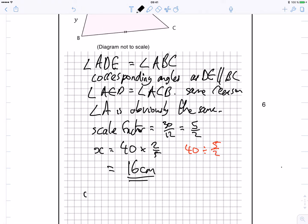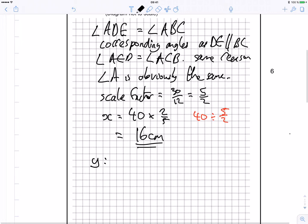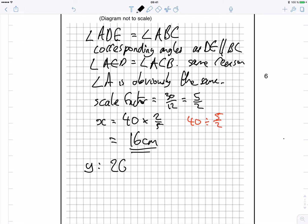Now Y is a bit trickier. We need to know what AD is. Now AD is 26. So we do 26 times by the scale factor, 5 over 2, which is equal to 65 centimeters.